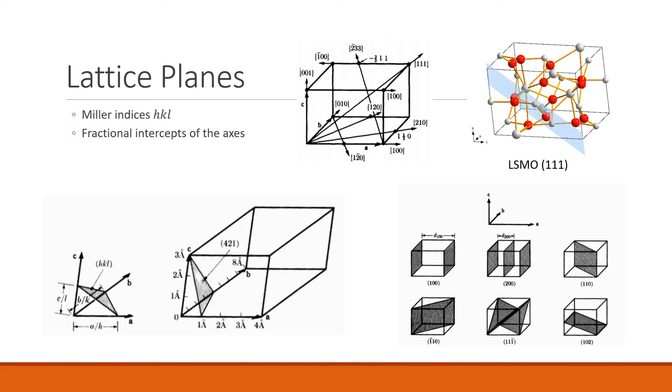In order to represent planes in a lattice, we can use a system called Miller indices, which are h, k, and l, corresponding to the axes a, b, and c respectively. And these represent fractional intercepts with each axis.